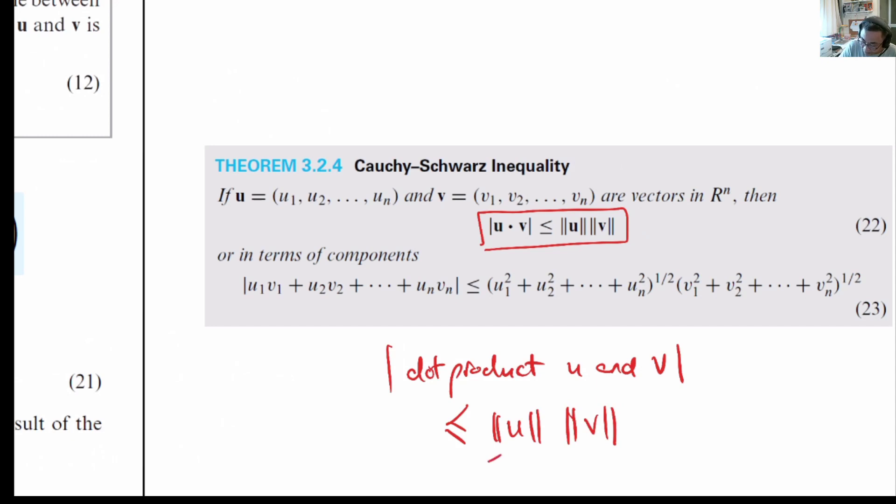Remember that the norm of u will be positive values or zero. The norm of v will also be positive values or zero. Norms are zero only when the vector u or v are zero.